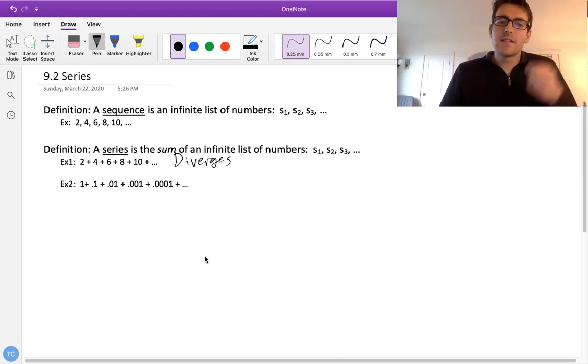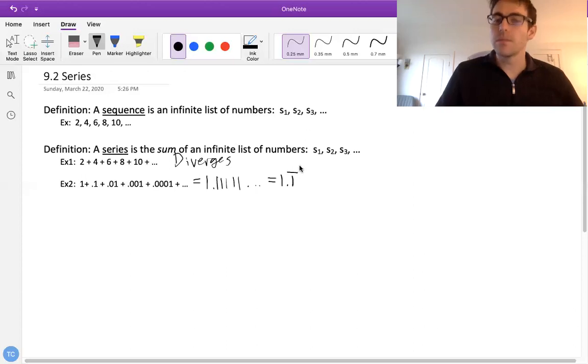I want to contrast that to the second example. If we take 1 and add it to 0.1, and add it to 0.01, etc., this thing is going to end up being 1.1111, etc., which we could also write as 1.1 repeating, if you've seen that before. This just means that this number is going to be repeating. And this thing also ends up happening to be 1 and 1/9.